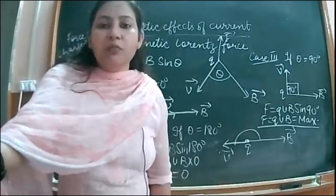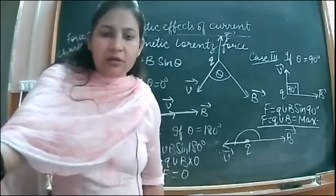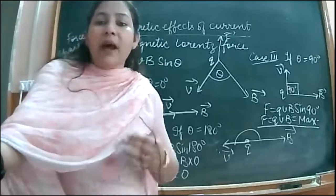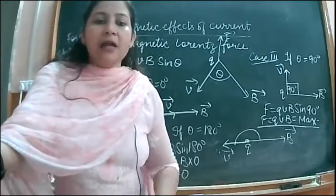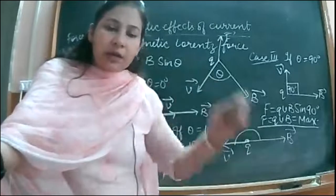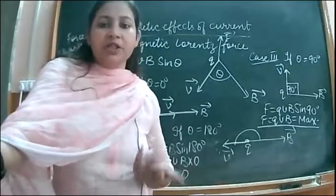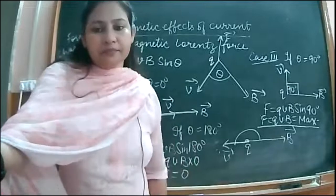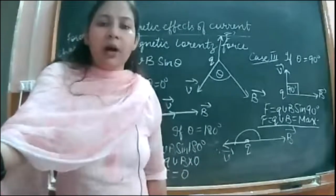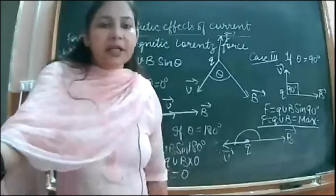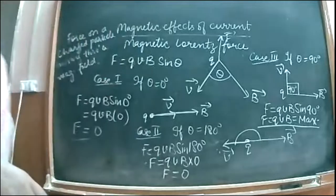When the charge particle moves at right angles — perpendicular — to the magnetic field, maximum Lorentz force acts on it and it follows a circular path. The particle will go along the circular path. Is that clear, students? Have a look at all three cases together.